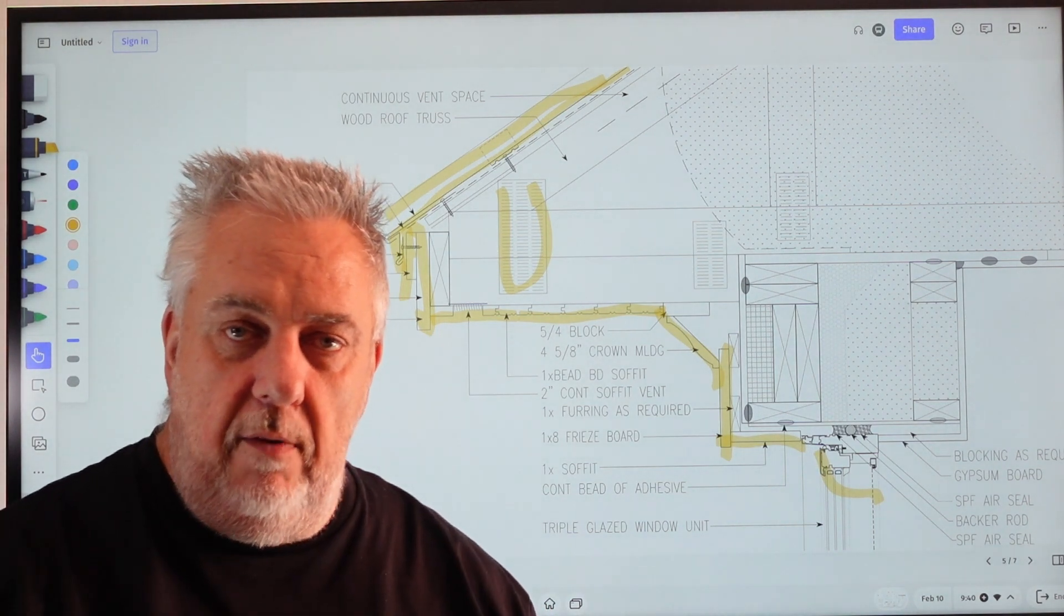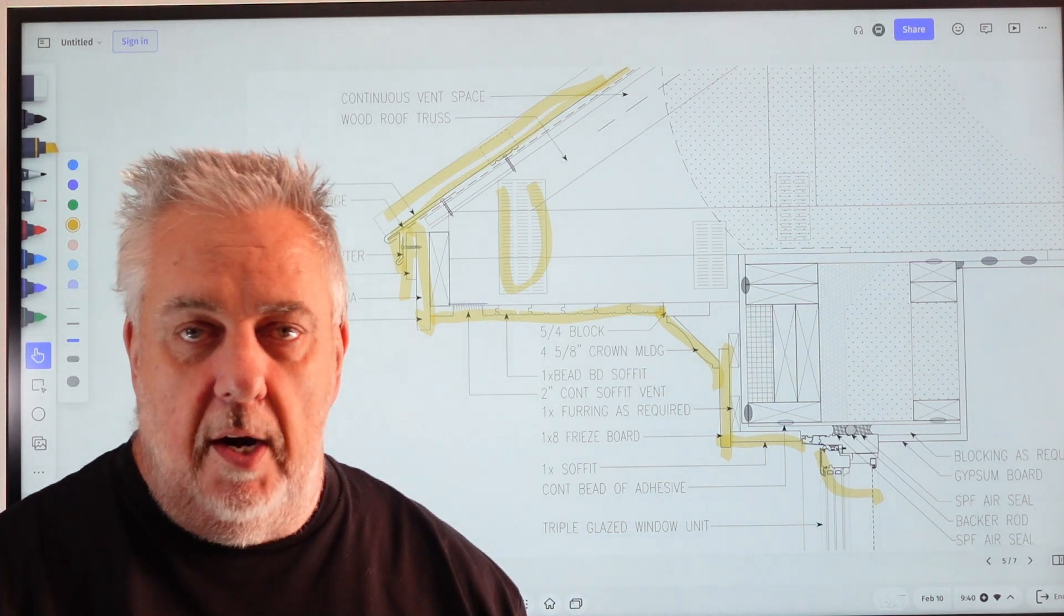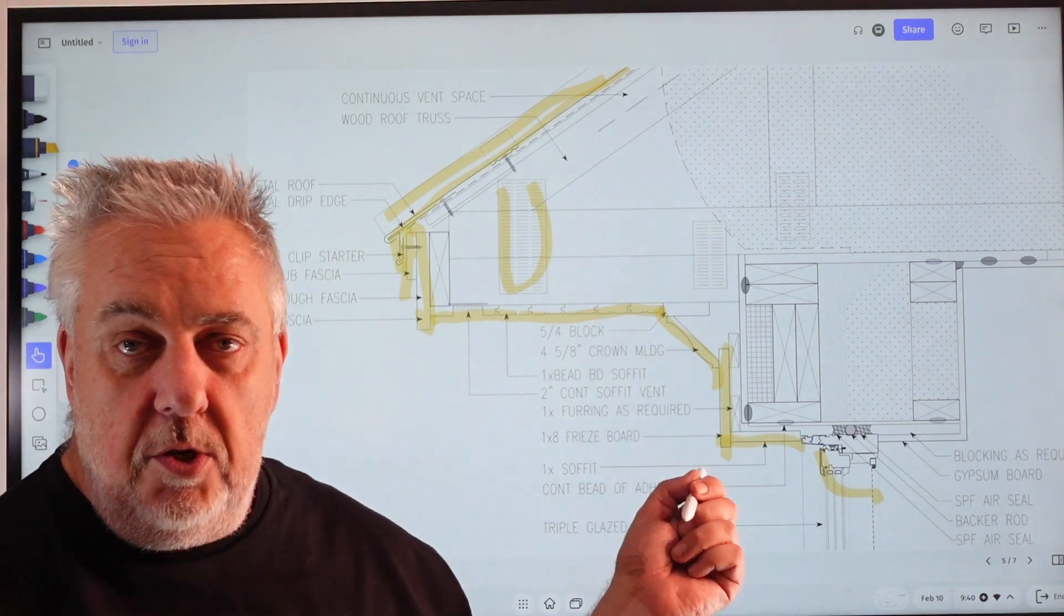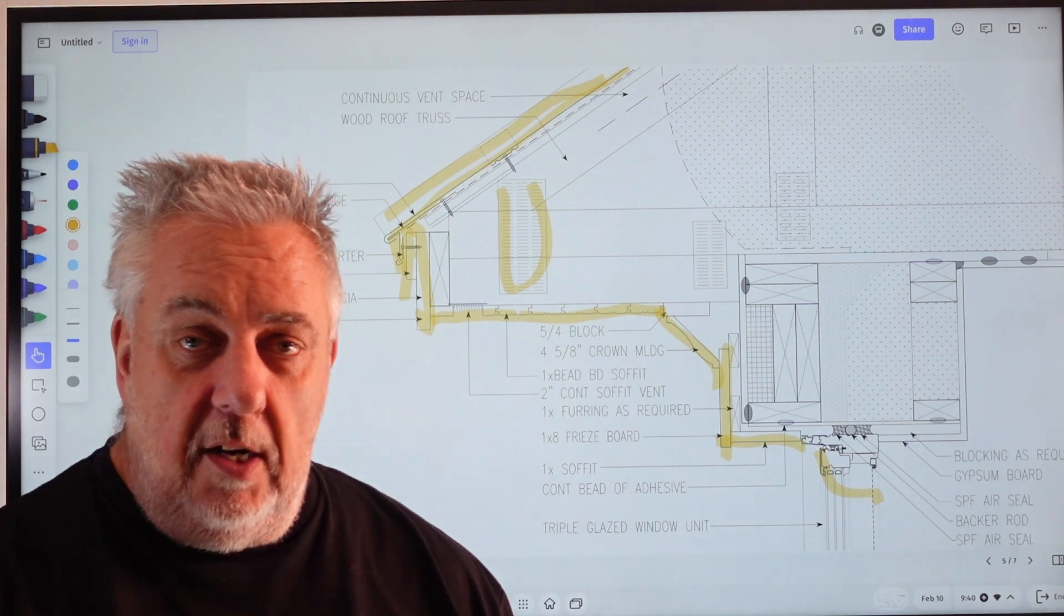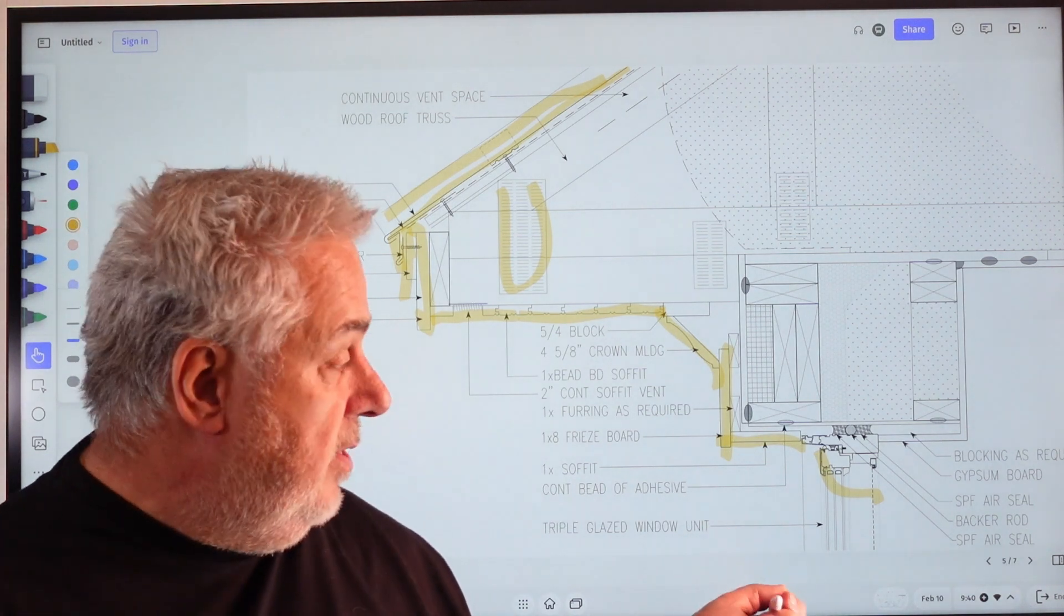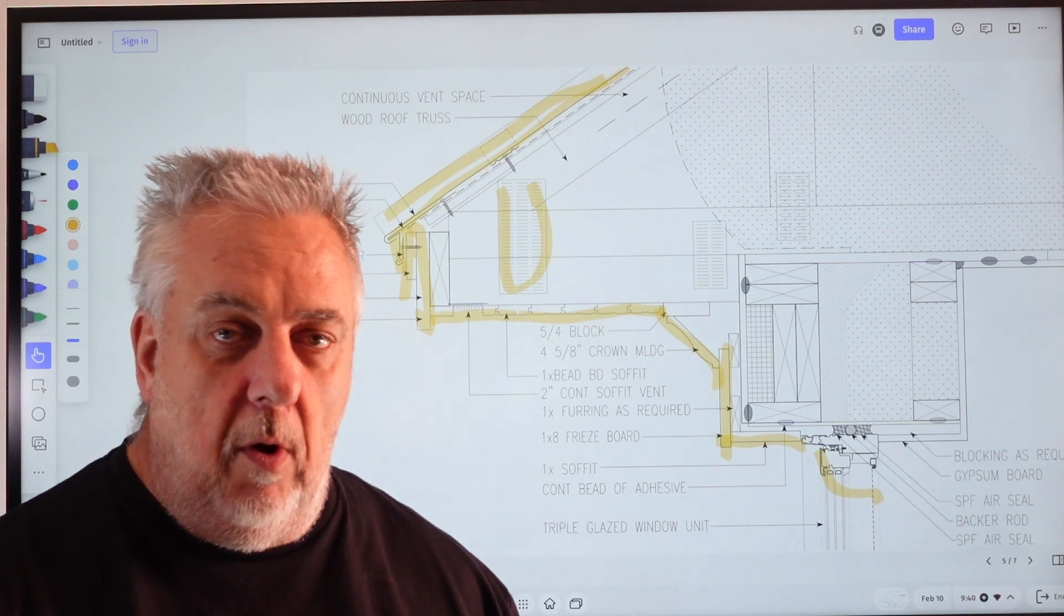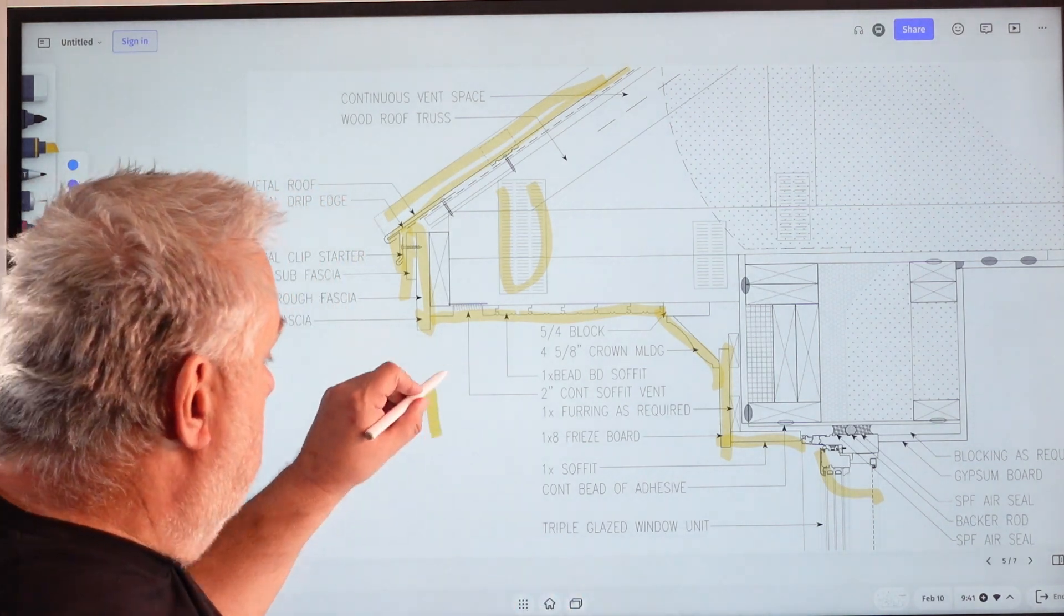So the framer uses the previous drawing, and when the framer's done, everybody that comes after him - the sider and the roofer - they use this drawing. For me as the architect, I only drew this detail once. This is just manipulating the notes on different layers to get what I call a set of twins.